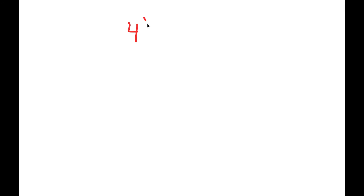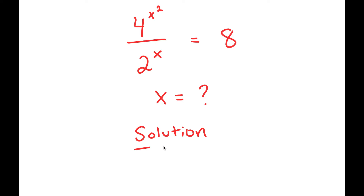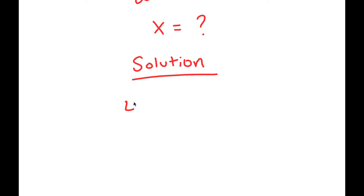Alright, so in this video I'm going to solve the equation 4 to the power of x squared over 2 to the power of x is equal to 8. The only variable I'm solving for, and the only variable in this equation, is x. For my solution, I'll first start by writing my equation down here: 4 to the power of x squared over 2 to the power of x is equal to 8.